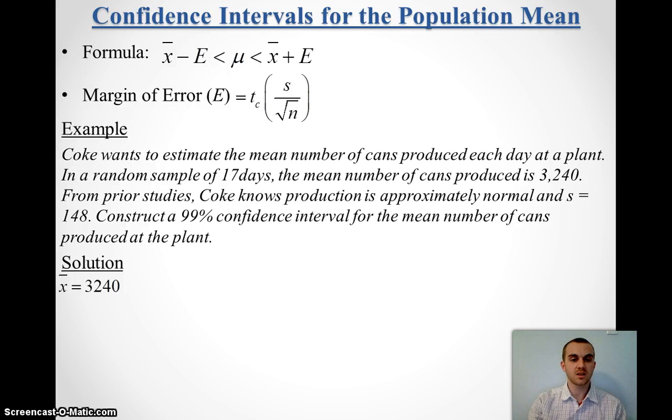So, I use that t.inv.2t. 99% of the complement would be 1%, n minus 1 is 16. And that tells me my t-critical value is about 2.92.